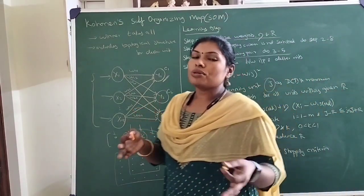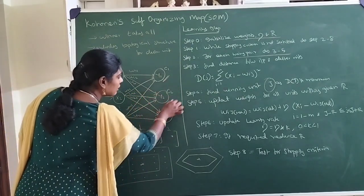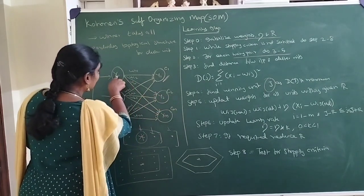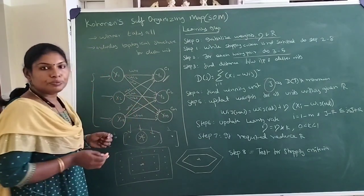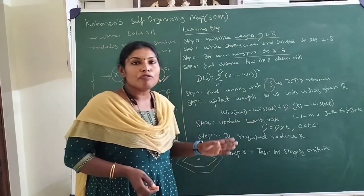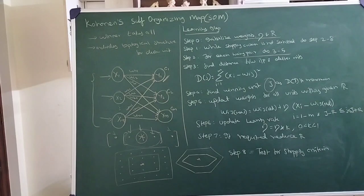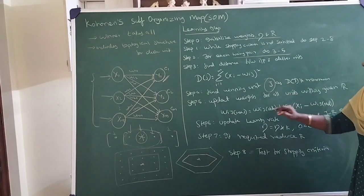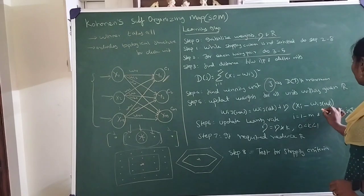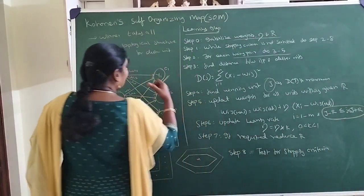Once we choose the winning unit, we update the weights, and weight updation is done only within that circle. If C2 is chosen as the winning unit, we update the weight of all links connected to C2. For all i and j — where j is the winning cluster — the weight update formula is: W_ij(new) = W_ij(old) + learning_rate * (Xi - W_ij(old)). This is not only done for the winning cluster alone; within the given radius, we update all the clusters connected to the winning unit.